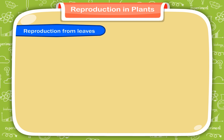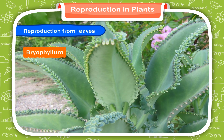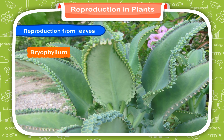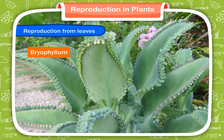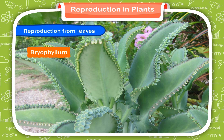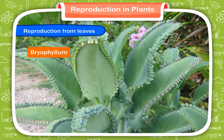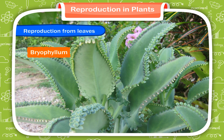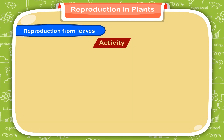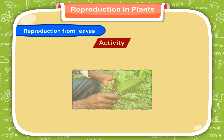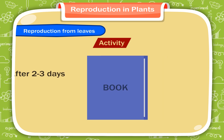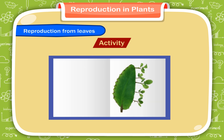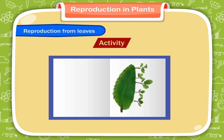Reproduction from leaves. Some plants like the bryophyllum have fleshy and thick leaves bearing buds on its edges. These buds on the edges of the leaves grow as new plants. When leaves fall down on the ground, the buds start growing. Activity: Pluck a bryophyllum leaf and place it in between the pages of a book. If you see it after 2-3 days, you will find several new plants growing from the buds all along the edges.